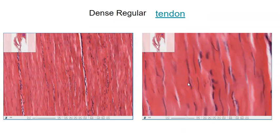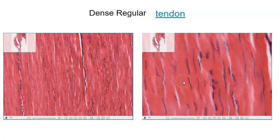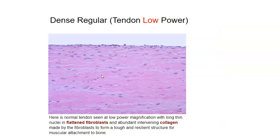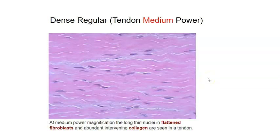Here's some dense regular connective tissue from a tendon. You can see all the fibroblasts lined up — it's not just the fibers that are parallel, the fibroblasts align too. Notice how thick those fibers are. Here's another tendon under low power and the same tendon under high power — you can see the fibroblasts are kind of flattened out. Even though we see waves, they're still all parallel to each other, so it's dense regular connective tissue.